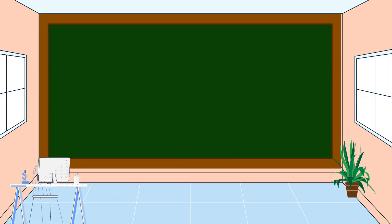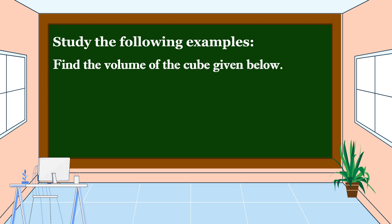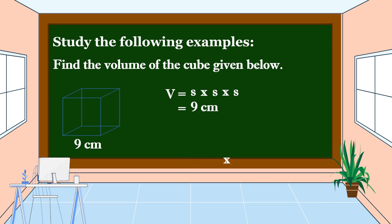To understand fully our topic for today, let's study the following examples. Find the volume of the cube given below. The side is 9 centimeters. To get the volume, we are going to use this formula: Volume is equal to side times side times side. Since the sides of a cube are equal, the side is 9 centimeters times 9 centimeters times 9 centimeters.